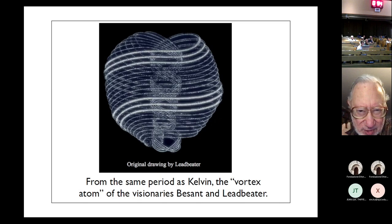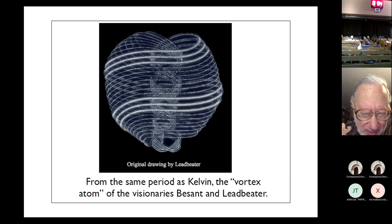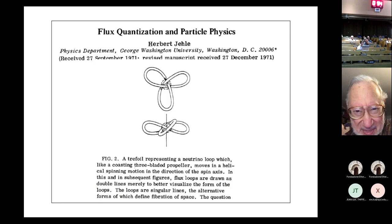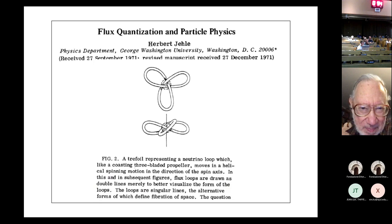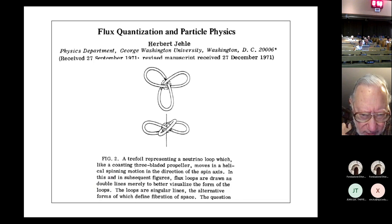You might be interested in this picture. This is from the same period as Kelvin's work and is a vortex atom drawn by the mystics Ledbetter and Besant, who had their own ideas about the role of knots in metaphysics. Here is a later image related to Kelvin — a paper by Herbert Yela from the 1970s entitled 'Flux Quantization and Particle Physics.' Yela had the idea, similar to Kelvin, that elementary particles were quantized, knotted flux. There have been many investigations rather similar to this since that time, and Kelvin's idea hasn't died, even if the luminiferous ether did kind of pass away.